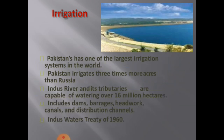Let's see what things are needed for agriculture. Irrigation network — Pakistan has one of the largest irrigation systems in the world. This irrigation system is the most important part of the land. Where the land is fertile, it is served by the irrigation system. This is the largest irrigation system in the world.